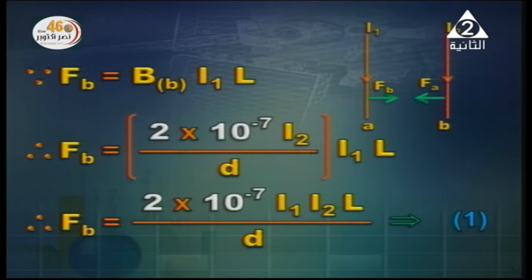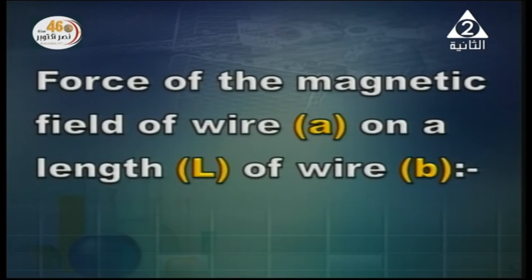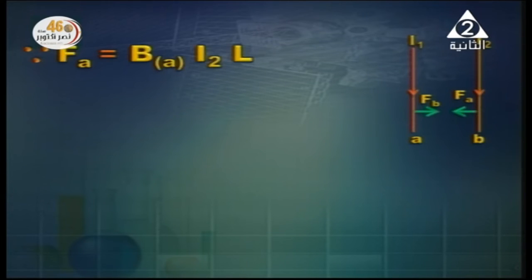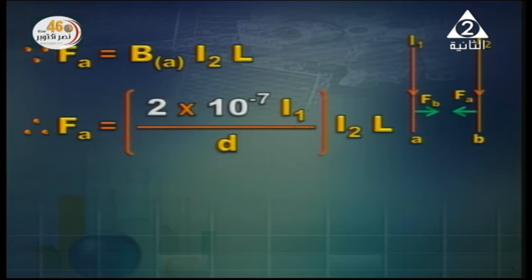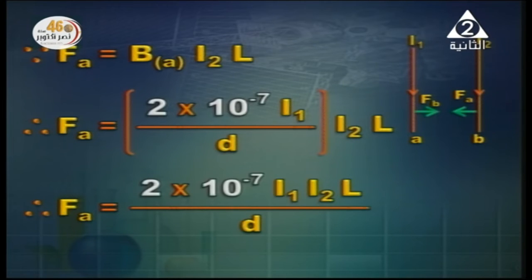Now we calculate the force of wire A on a length L of wire B — wire A now acts as a magnet to wire B. Force of A equals the magnetic field of A times I2 times L. The magnetic flux density of wire A equals 2 × 10⁻⁷ × I1 / D. So F_A = 2 × 10⁻⁷ × I1 × I2 × L / D. This is the second equation.